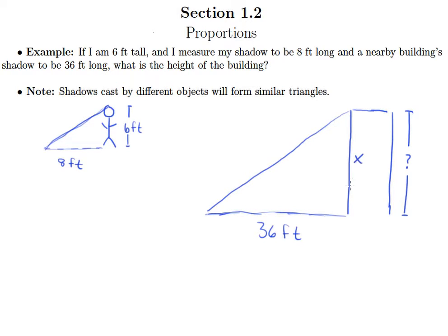So here we'll call that height X. We understand that the height of me to the height of the building should equal the length of my shadow to the length of the building shadow. And it doesn't hurt to reduce this fraction. Four is common to both the top and bottom, so that just makes life easier. So 6 over X equals 2 over 9.